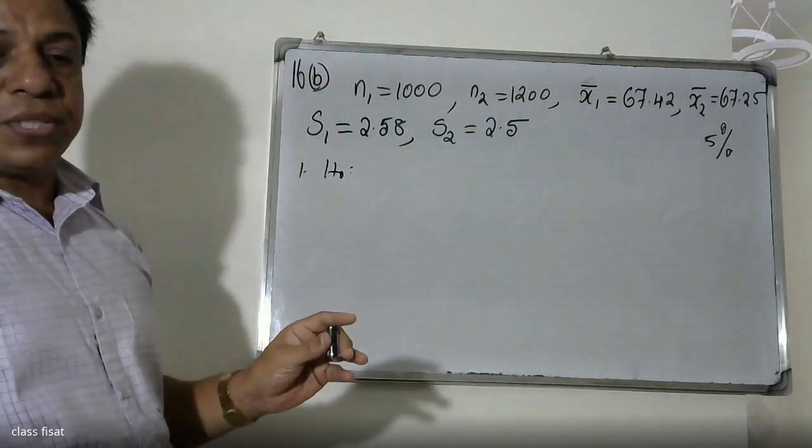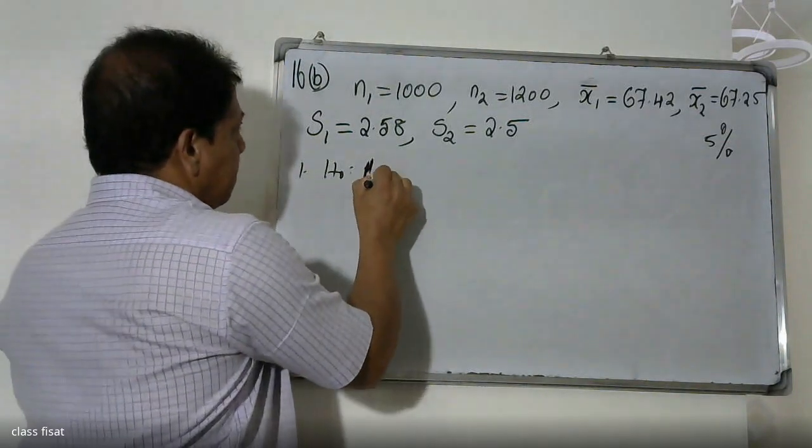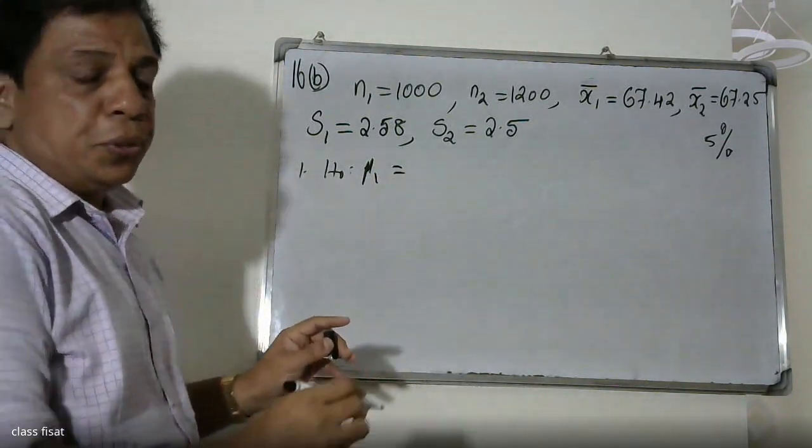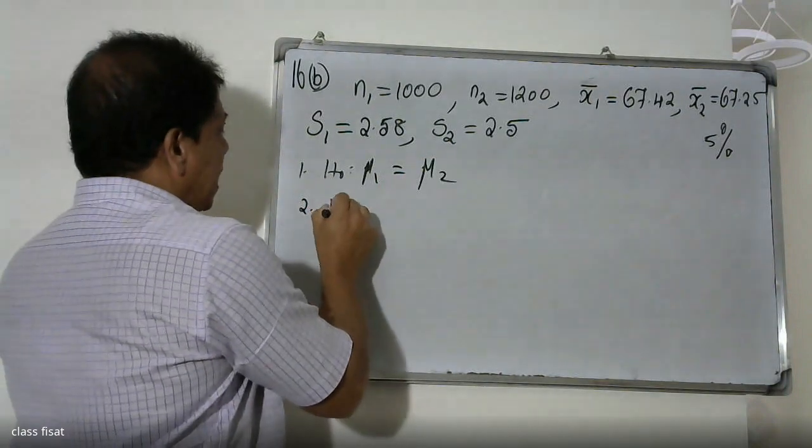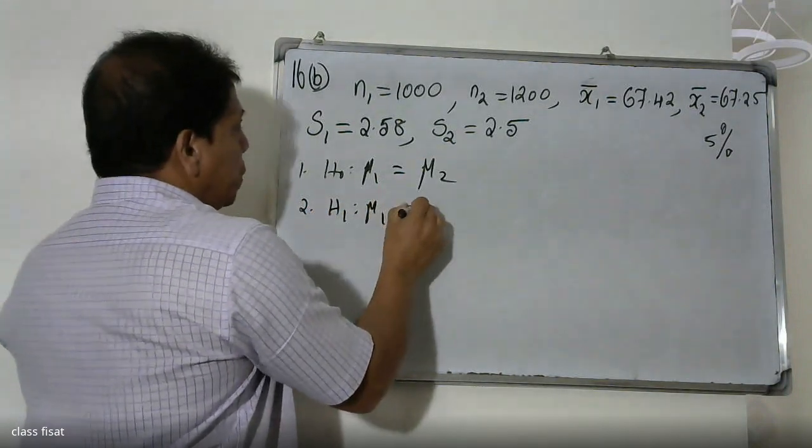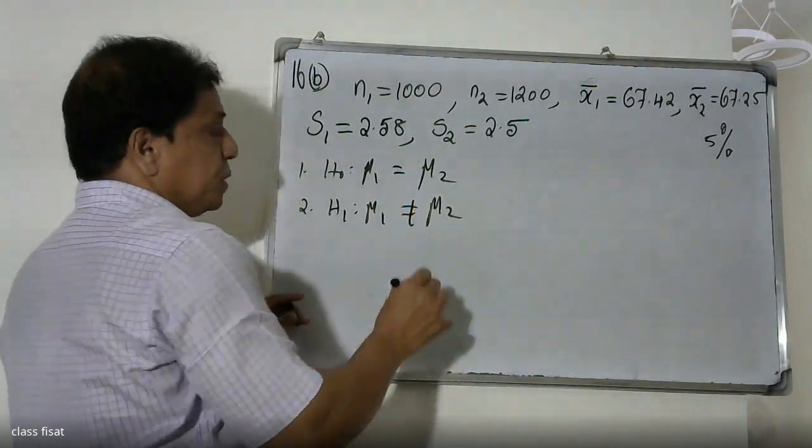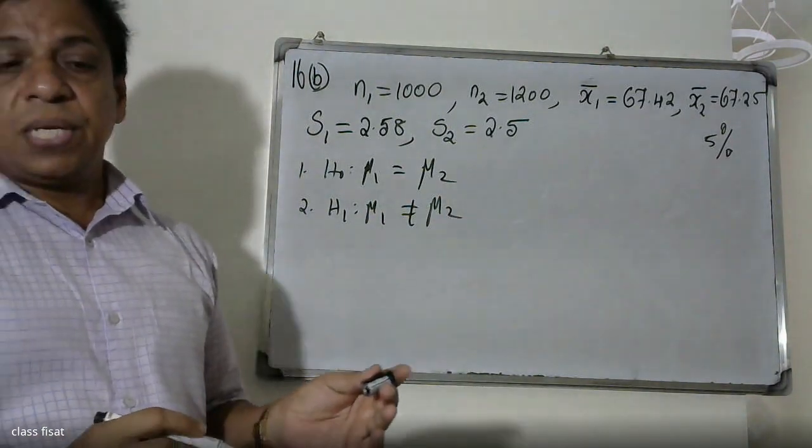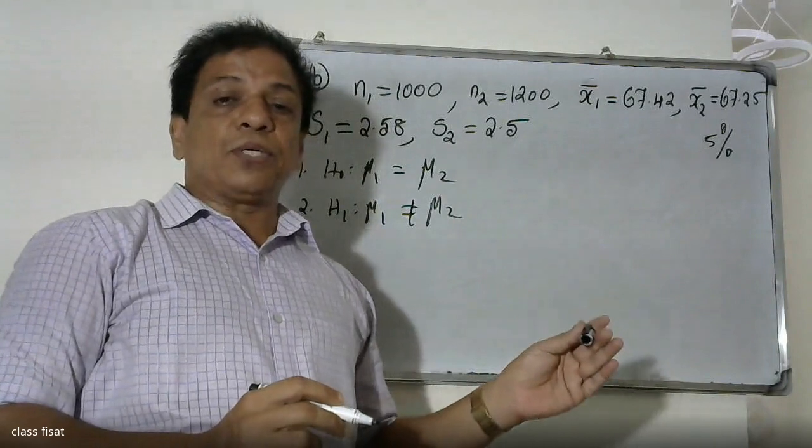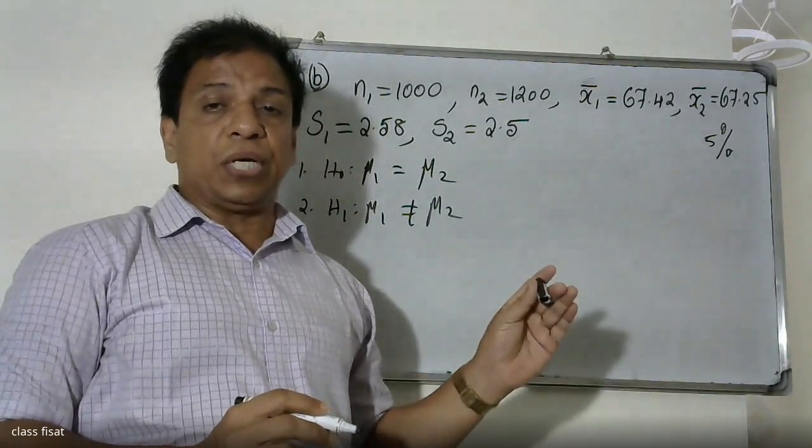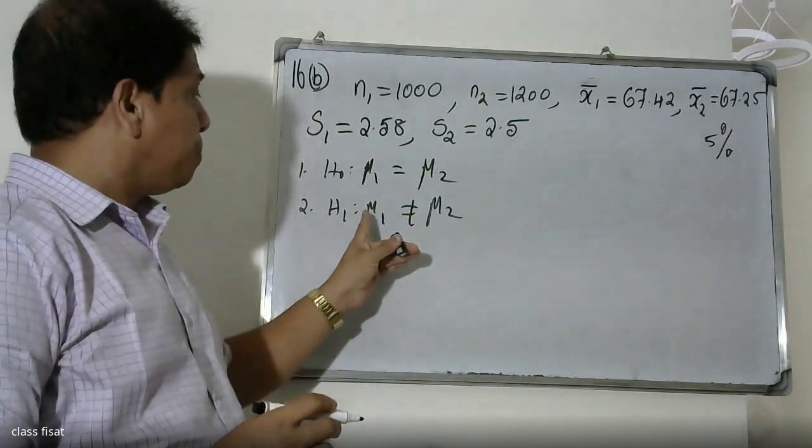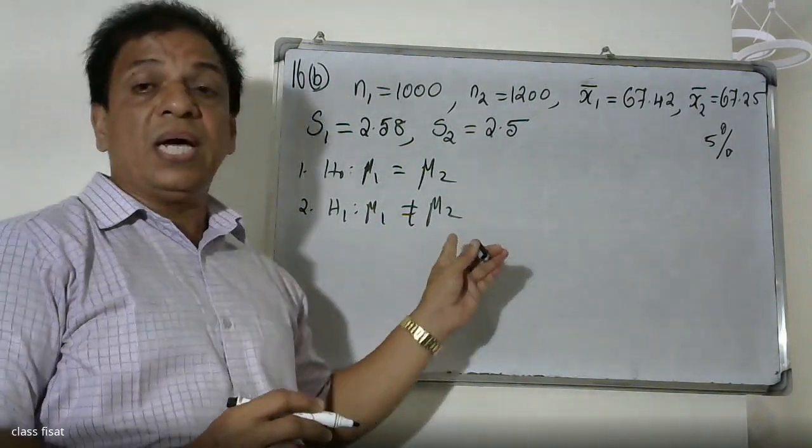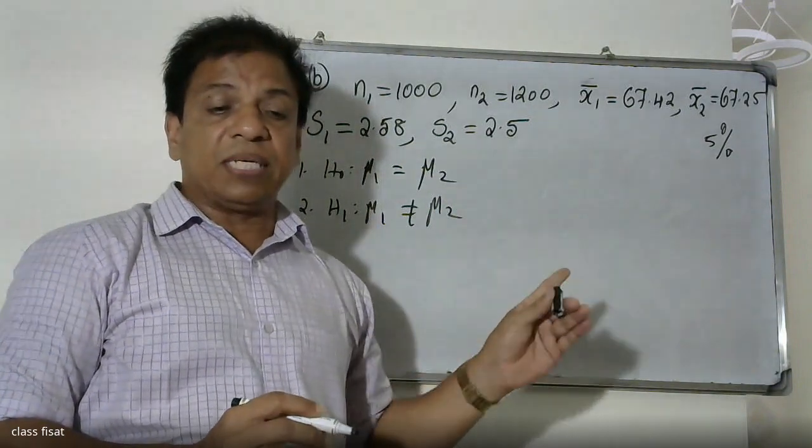H0: μ1 = μ2, this is the null hypothesis. H1: μ1 ≠ μ2, this is the alternative hypothesis. In this case, when the hypothesis is decided, the alternative hypothesis is decided.